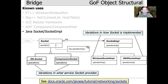On Windows, the Java socket uses the Windows socket implementation; on Unix, the Unix socket implementation, and so on. There's also derivation of the abstraction of the socket API itself to make different types of services — for example, an SSL socket that uses encryption, or a compression socket that compresses data. So this is again a textbook example of using bridge in the context of Java.